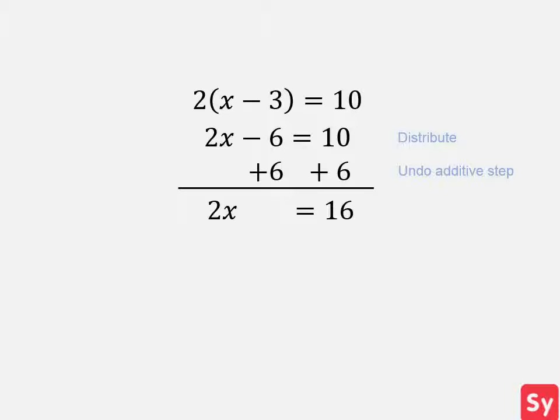Now we want to undo the multiplicative step. We see that x is multiplied by 2, so we divide each side by 2. This becomes x equals 8, which is our answer.